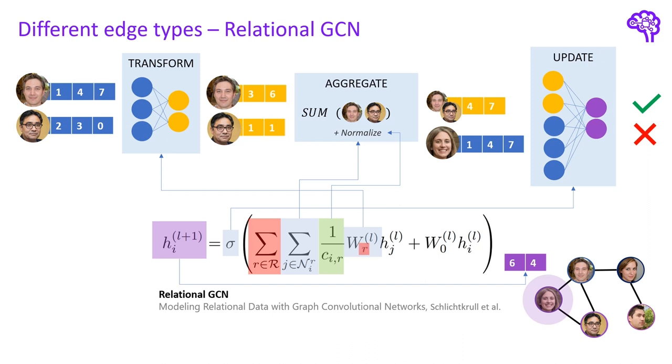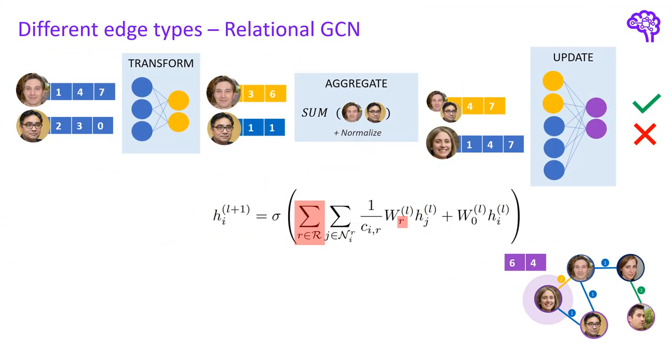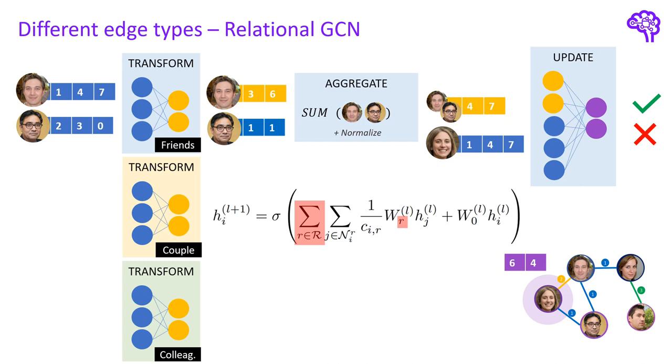You see that the weight matrix is indexed with this R as well. That simply means, depending on the type of edge, we apply different transformations to the nodes. This is sometimes also called edge-conditioned GNN. If we visualize this, we quickly see, depending on the type of Alice's neighbor, friend, couple or colleague, we pass the node vector through the corresponding weight matrix. Doing so, we can include the edge information as we have different transformations applied based on the type of connection. As a consequence, we will of course also have different adjacency matrices. So one that holds the information for friends, one for couple connections and finally another one for colleagues. Also note how the embedding of Alice's partner is yellow and the embedding of her friend is blue as they went through different transformations.